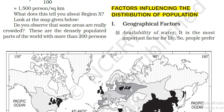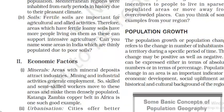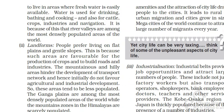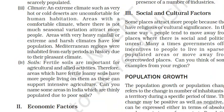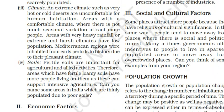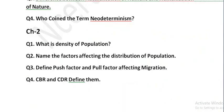Geographical factors affecting population include availability of water, landforms, and climate. Economic factors include minerals, urbanization, industrialization, employment generation opportunities — wherever opportunities are, people will go and live there, which affects population distribution. Social and cultural factors also cause people to prefer living in specific areas. These are important questions from Chapter 2.